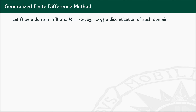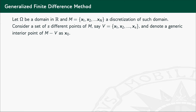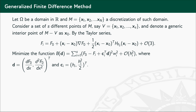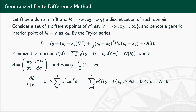Let me briefly explain the fundamentals of the GFDM. We assume omega is a domain in R and choose a discretization of the domain. By choosing a star of points — a subset of the set M — and applying the Taylor series, we arrive at a weighted residual function with respect to vector D, which contains the approximation of the partial derivatives. By minimizing this function, we arrive at a system of linear equations, and we can explicitly define vector D as a linear combination of the values of the solution F at the surrounding points.